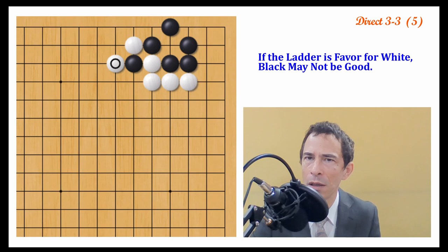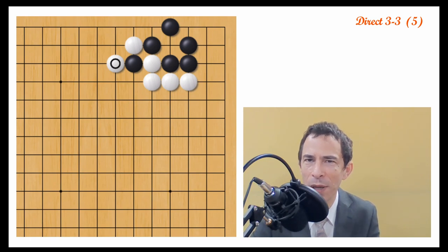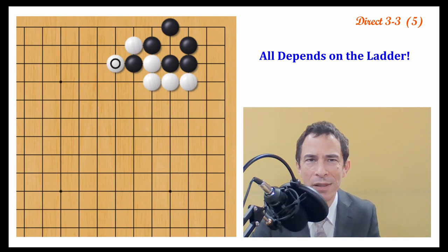And so it all depends on whether the ladder favors white or not. I would say this is not a good idea for black, usually when the ladder favors white. It always depends on whether black has some great ladder blocking move. If black has a good ladder blocking move, then it's okay for black. But otherwise, capturing the one stone here is probably good for white. So it depends on the ladder.